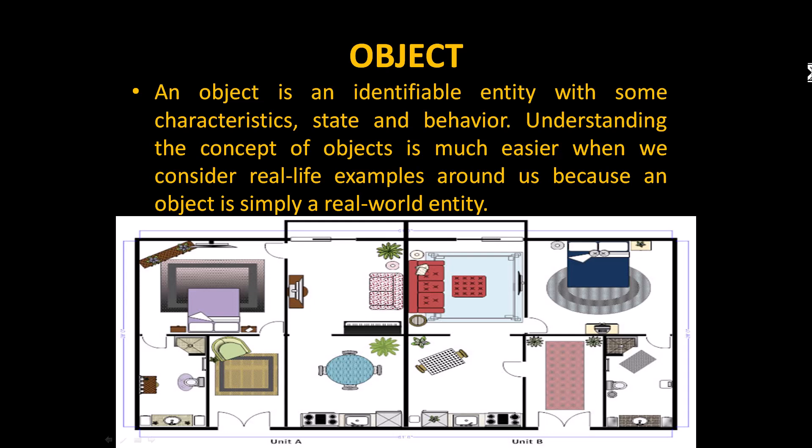An object is an identifiable entity with some characteristics — state and behavior. Understanding the concept of objects is much easier when we consider real-life examples around us, because an object is simply a real-world entity. An object is an instance of a class. You have considered house as a class, and now you can associate the contents inside the house as objects.